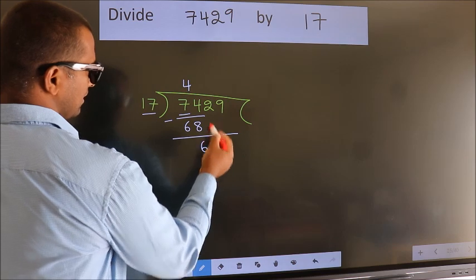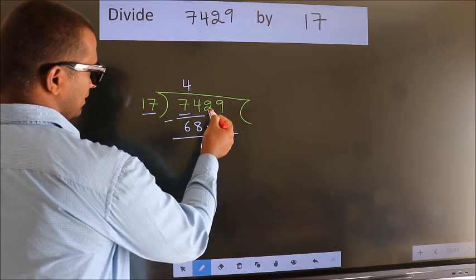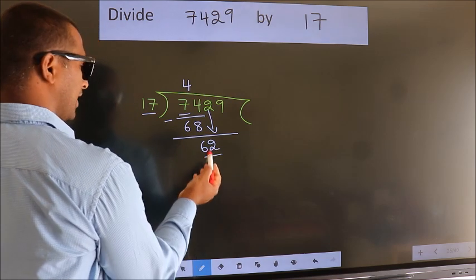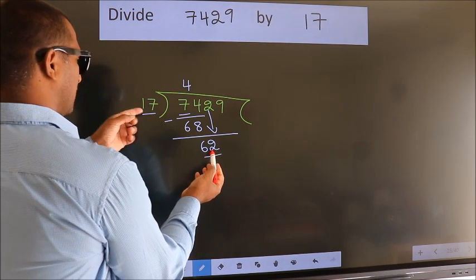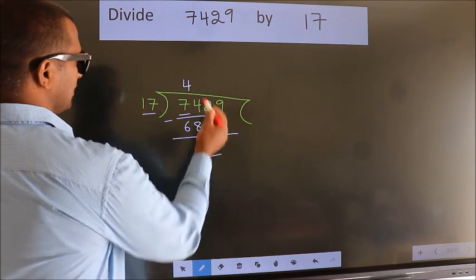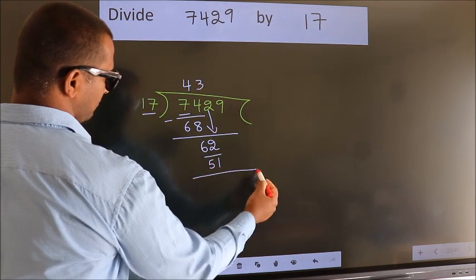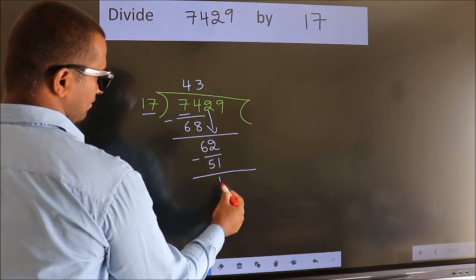After this, bring down the next number. So 2 down. So 62. A number close to 62 in the 17 table is 17 threes, 51. Now we subtract. We get 11.